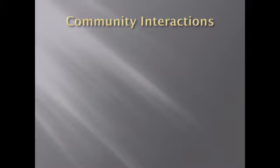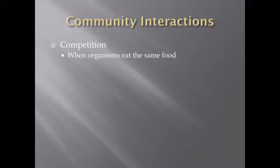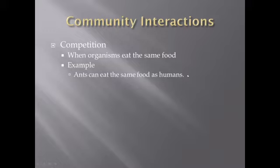Community interactions describes how organisms affect one another. The first concept is competition — when two organisms eat the same food. For example, ants and humans eat the same types of foods; when ants get into our pantries we remove them. The cats of Riyadh would compete with humans for food if they could, but since humans are bigger, the cats don't compete effectively.